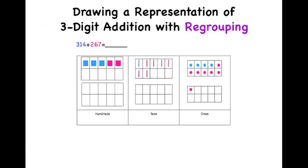This leaves us with five hundreds, seven tens, and eleven ones. But we can't have eleven ones, so that means that we need to regroup.